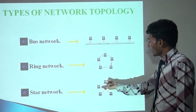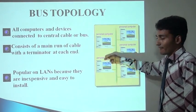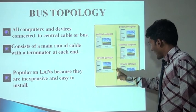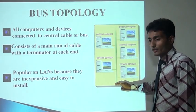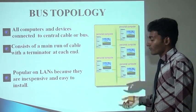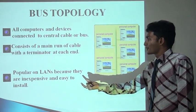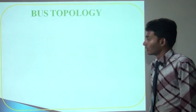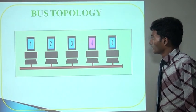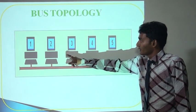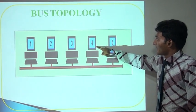Star network means all computers are connected with each other through a central device. In bus topology, all computer devices are connected through a central cable or bus. At both ends, terminal connectors are required — without a terminal, this system does not work. This topology is generally used in many places because it is easy to install and less expensive. For example, computer number two wants to send data to computer number four — it is sent on the central channel and computer four receives the data.